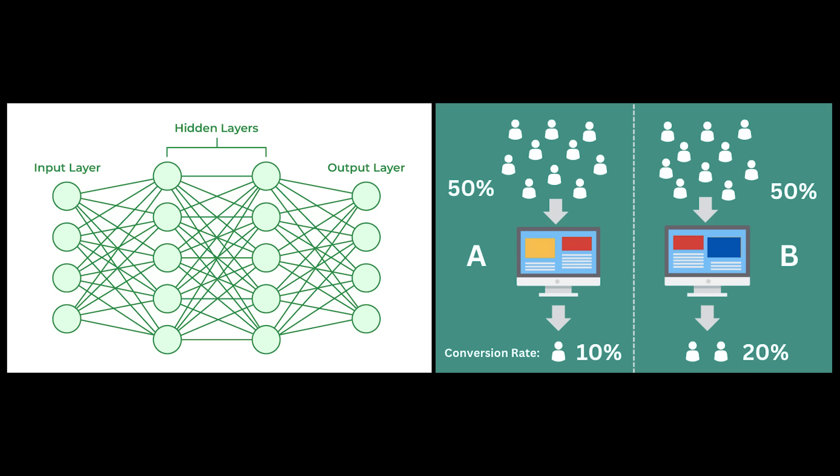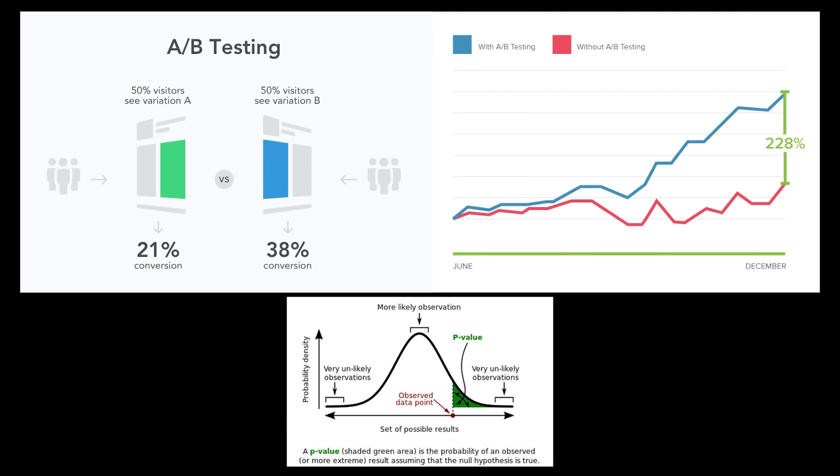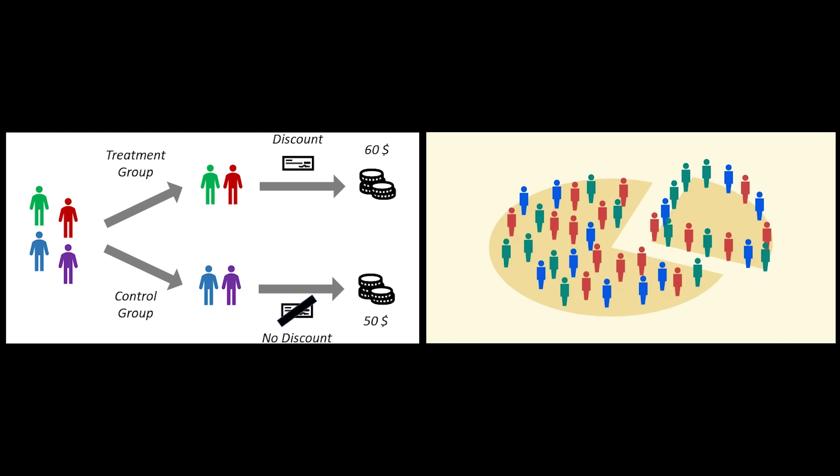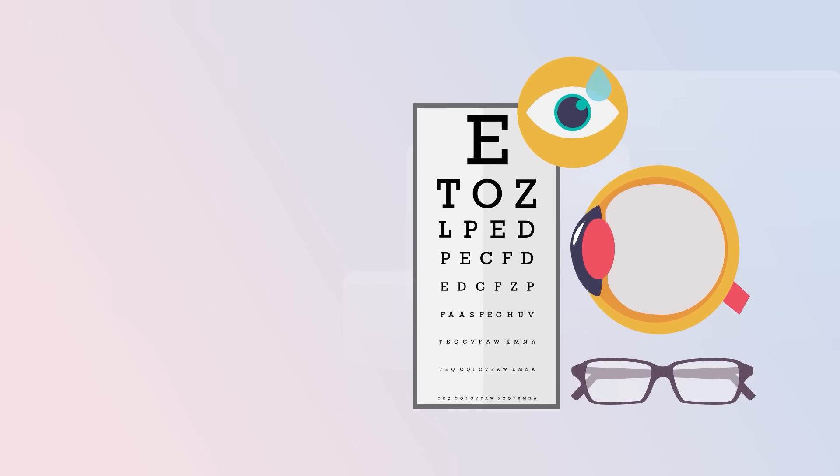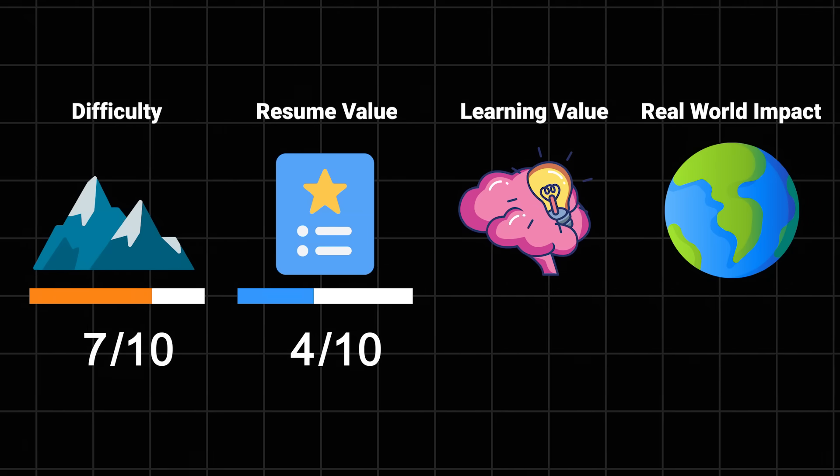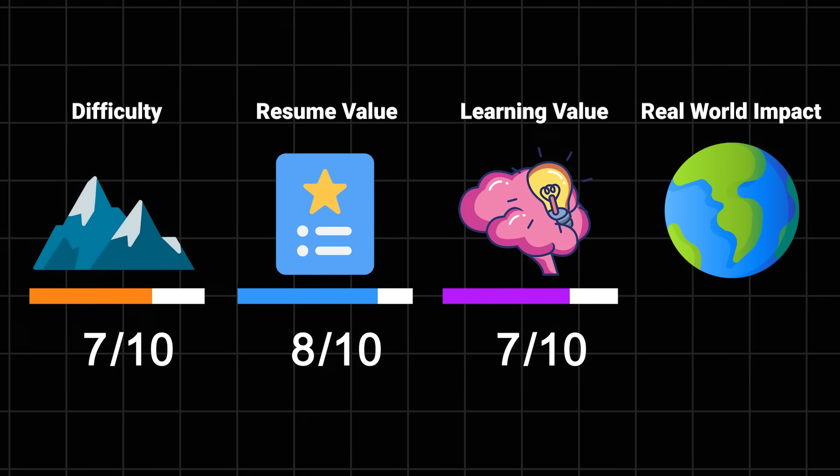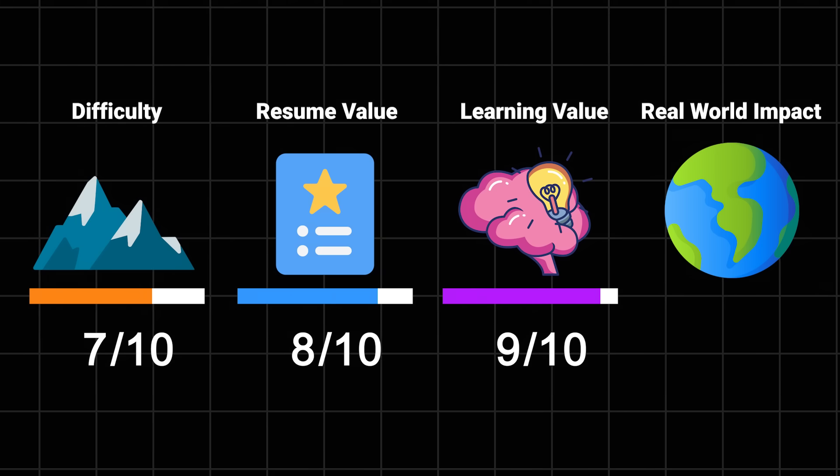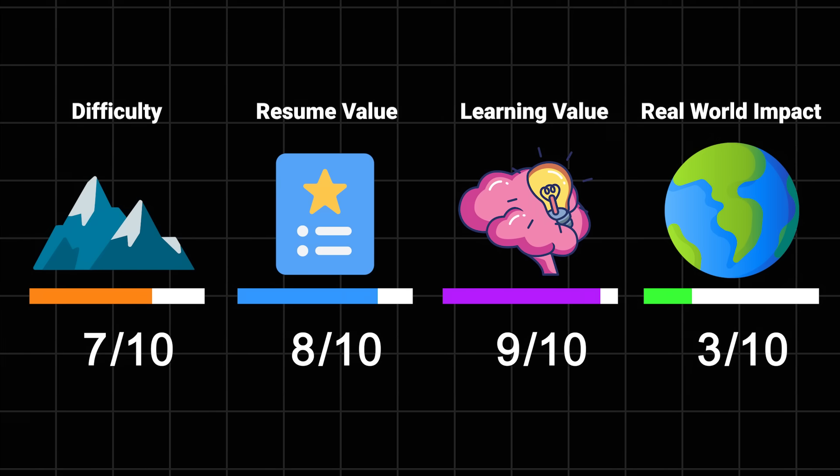AB testing framework. Not as flashy as deep learning, but probably more useful in your first job. You'll build a system that can actually tell if your ML models are making things better, or if you're just fooling yourself with fancy metrics. You'll learn about statistical testing, experiment design, and why 'it looks better' isn't a valid metric. Difficulty: 7 out of 10. Resume value: 8 out of 10. Learning value: 9 out of 10 because you'll see the power - no pun intended - of statistics in the real world. And impact: 8 out of 10 because this is what real data scientists do all day.